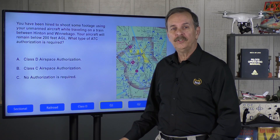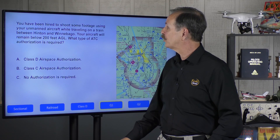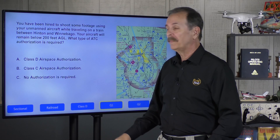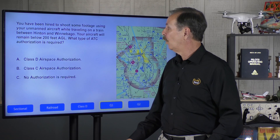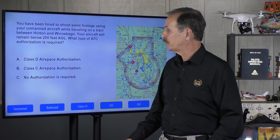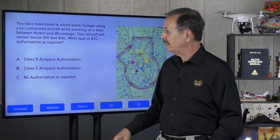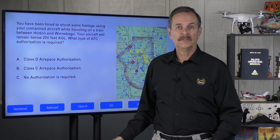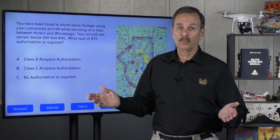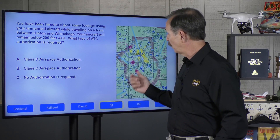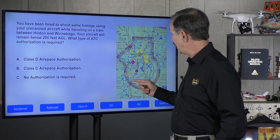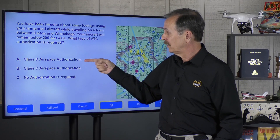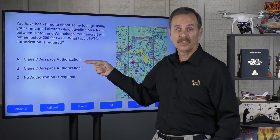You've been hired to shoot some footage using your unmanned aircraft while traveling on a train between Hinton and Winnebago. Your aircraft will remain below 200 feet. What type of ATC authorization is required — Class D, Class C, or is no authorization required at all? This one's pretty easy. We looked at the sectional chart and determined that there is Class D in the center but nothing else. So Class D airspace authorization is the correct answer.